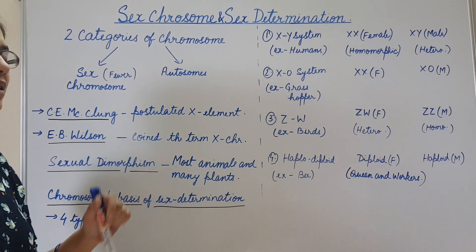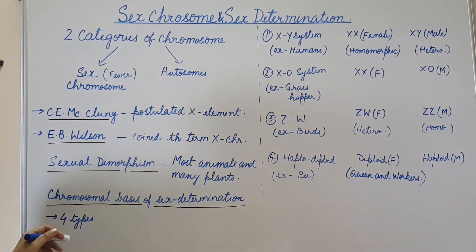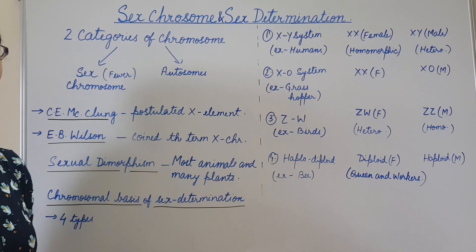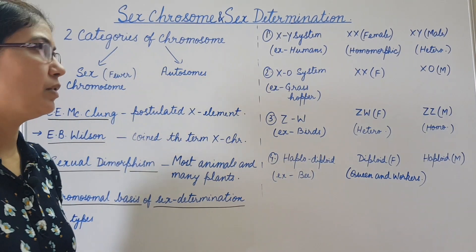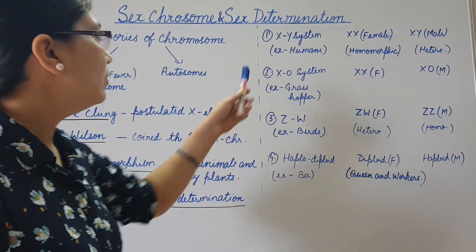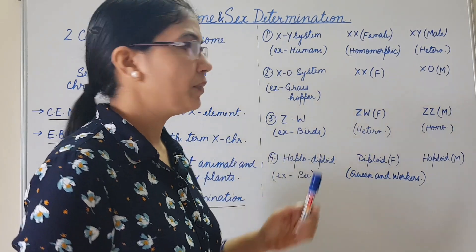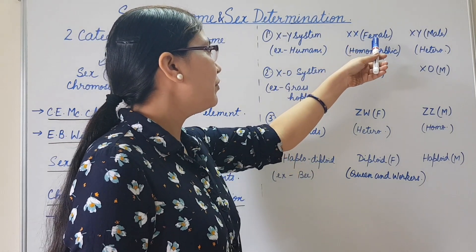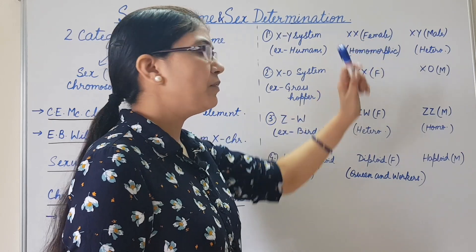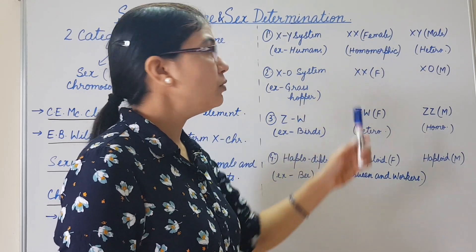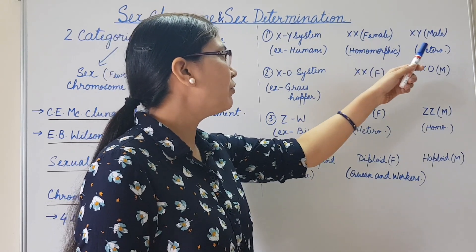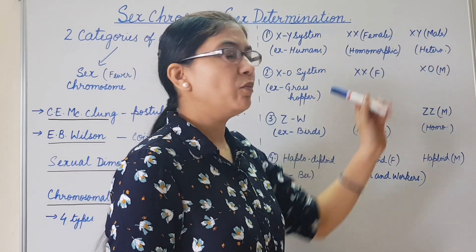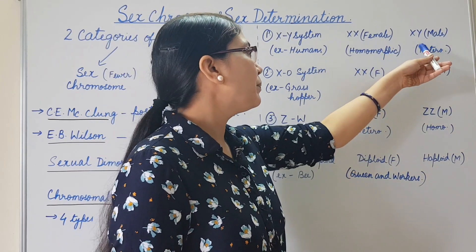For the chromosomal basis of sex determination, there are four systems. The first is the XY system, example: humans. Here, females have a pair of X chromosomes, so females are homomorphic, and males have one X chromosome and one Y chromosome, so males are heteromorphic.